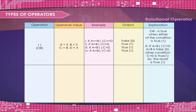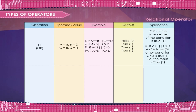Or is true when either of the conditions is true, 1. Example 3: If A is less than B or C is greater than D — A less than B is false, 0. Other condition: C greater than D is true, 1. So the result is true, 1.